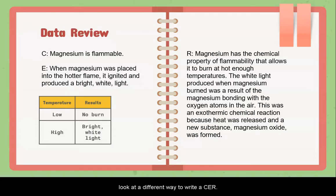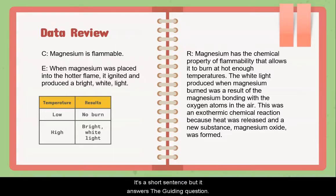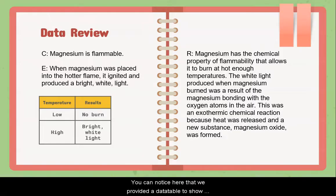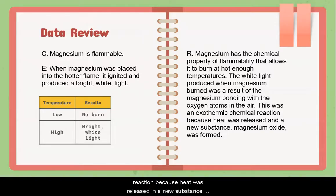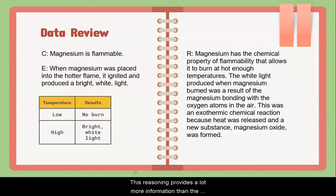We're going to look at a better way to write a CER — you can already notice this one has a lot more information. Claim: Magnesium is flammable. It's a short sentence, but it answers the guiding question. Evidence: When magnesium was placed into the hotter flame, it ignited and produced a bright white light. A data table is also provided to show the results of the experiment. Reasoning: Magnesium has the chemical property of flammability that allows it to burn at hot enough temperatures. The white light produced was a result of the magnesium bonding with oxygen atoms in the air. This was an exothermic chemical reaction because heat was released and a new substance, magnesium oxide, was formed. Even if you don't know all the science behind this reasoning yet, you'll learn it as you go through the year. The evidence backs up the claim, and the reasoning shows that we understand what's happening.